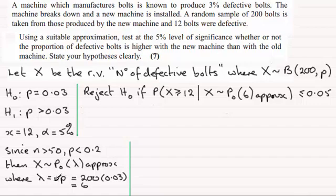That's going to be 200 for n times P at 0.03, and that comes to 6. So again, that's telling us that we're expecting 6 defective bolts from this machine, yet we get 12, so that's why we think that the proportion should be higher.